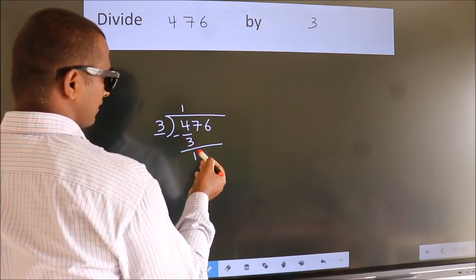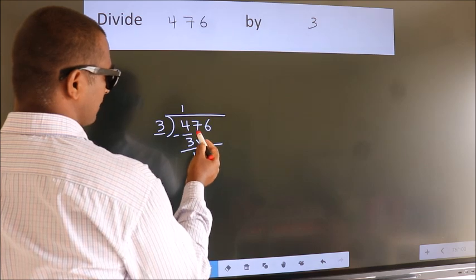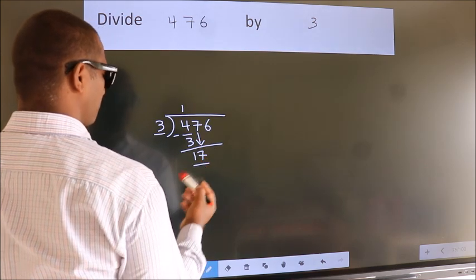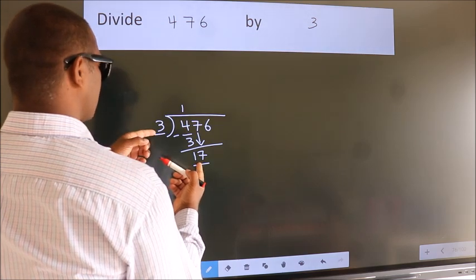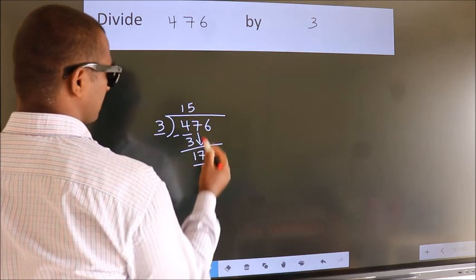After this, bring down the beside number. So, 7 down. So, 17. A number close to 17 in 3 table is 3 fives 15.